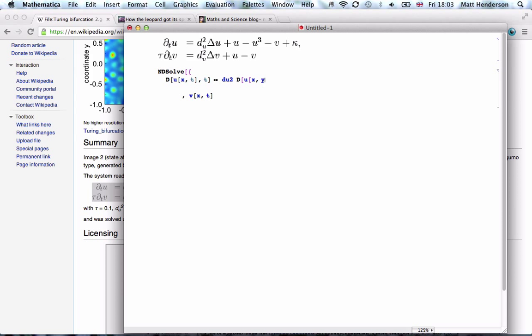So du x t with respect to x twice is how you do that. Alright, and then plus u of x t minus u cubed. So that's command ctrl 6 gives you the exponent there. Minus phi minus kappa, escape k escape. So that's the top equation done.